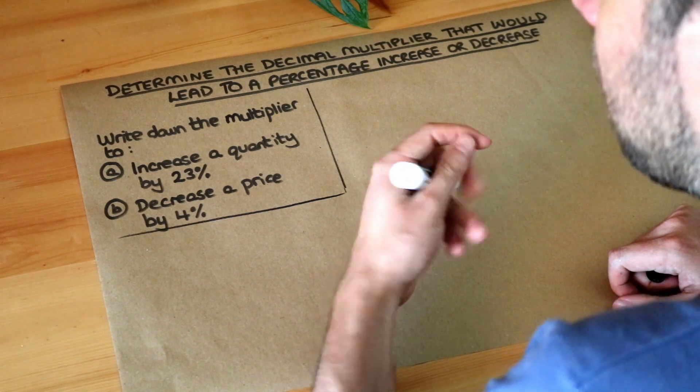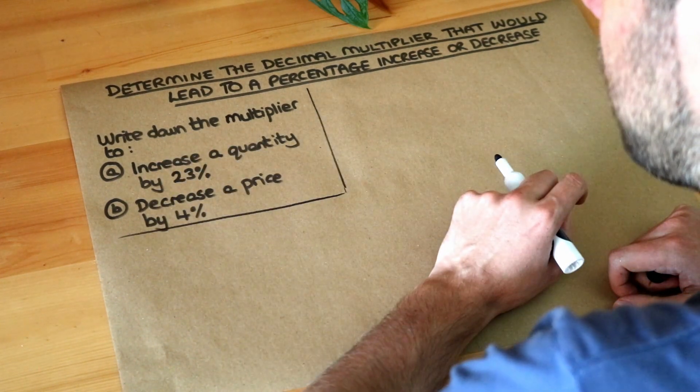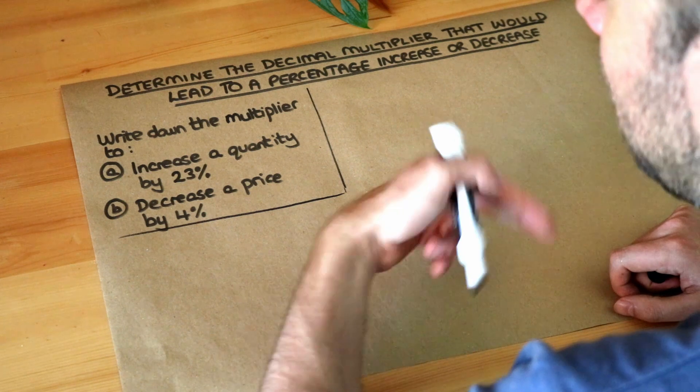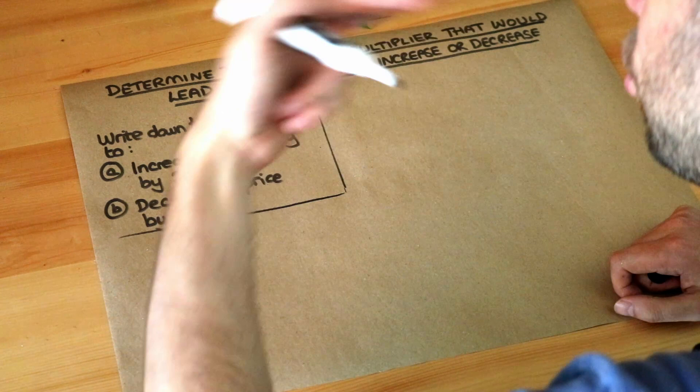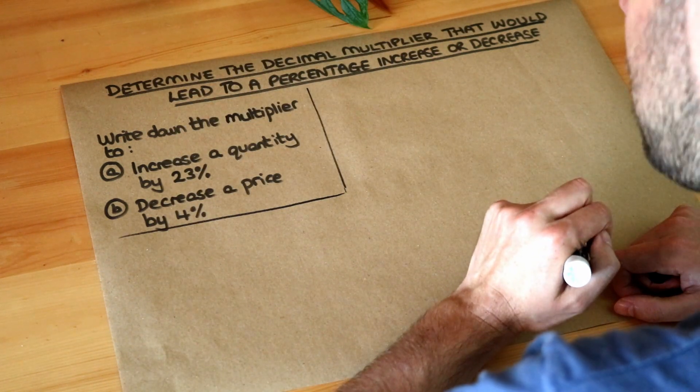So what would we multiply a number by to increase a quantity by 23%? What would we multiply a number by to decrease a price by 4%? We'll actually do that multiplication in further videos.